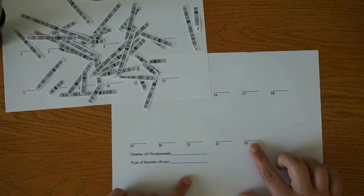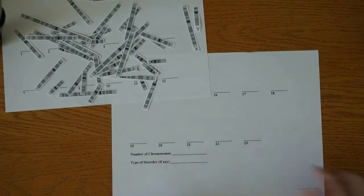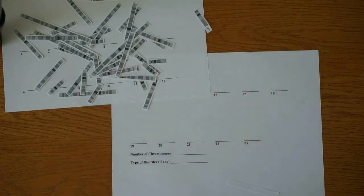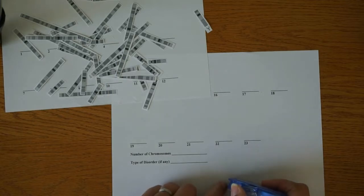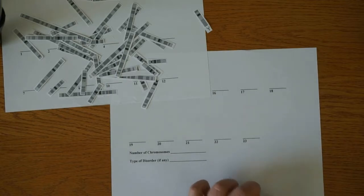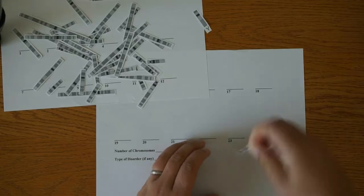And you are going to glue that on, that is your 23rd pair. The sex chromosomes always go last, the very last pair. So we are going to glue the X and Y chromosomes on for the 23rd.